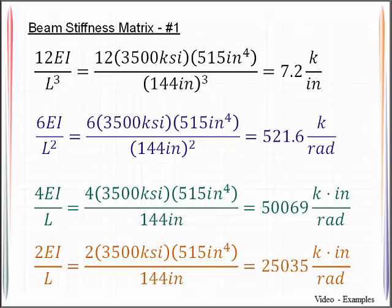For translational degrees of freedom, units are kips per inch. For rotational degrees of freedom, it's kip-inches per radian. For the cross terms—the terms that cross between translational and rotational degrees of freedom—the units are kips per radian.